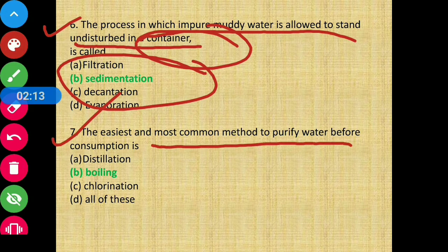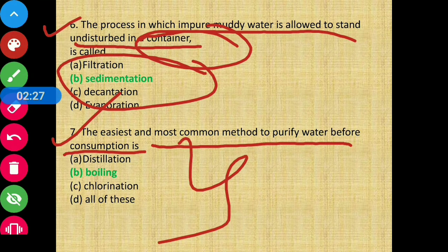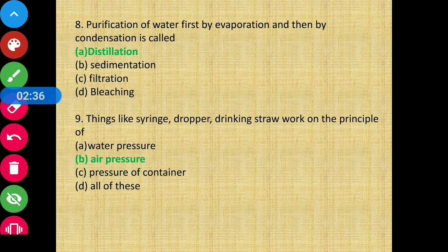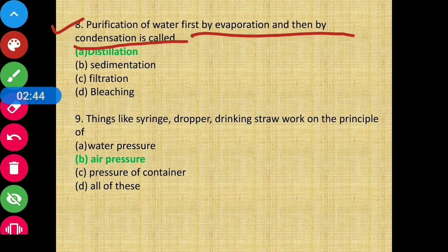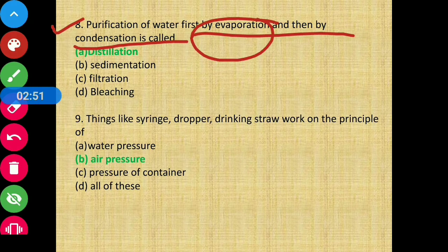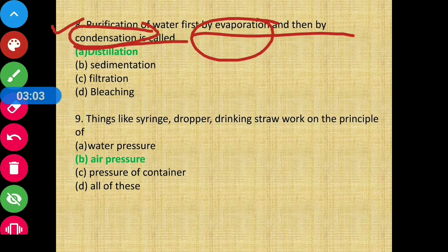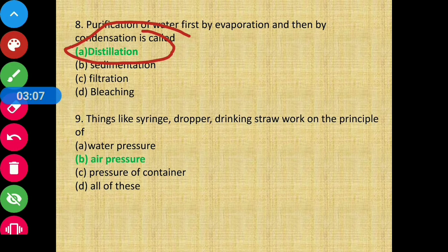Question number 7 — the easiest method of purifying water is boiling. Option B is the correct answer. Question number 8 — purification of water first by evaporation and then by condensation is called distillation. That purification method is called distillation. Option A is the correct answer.